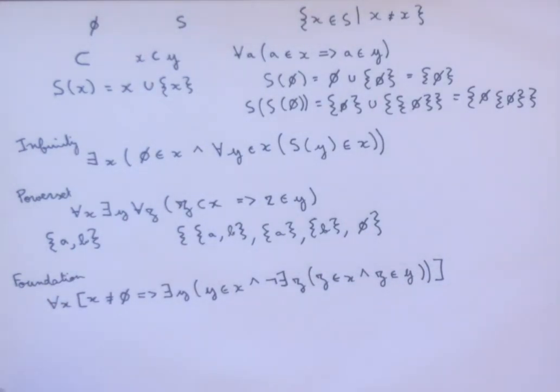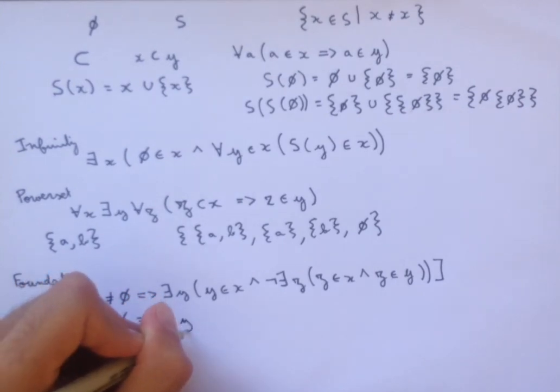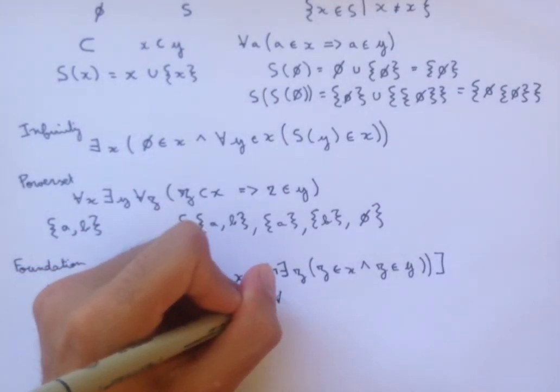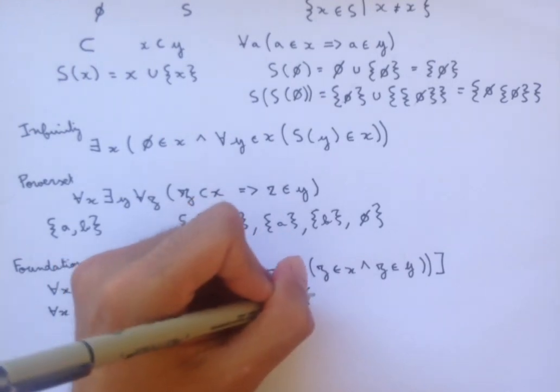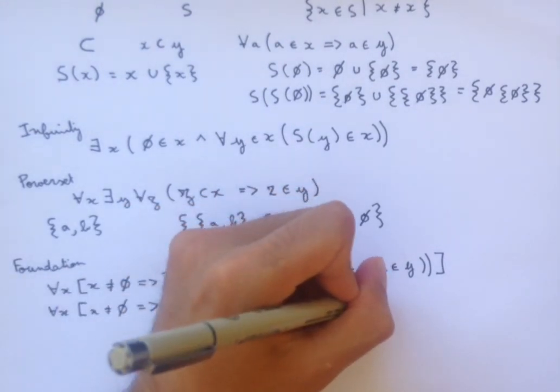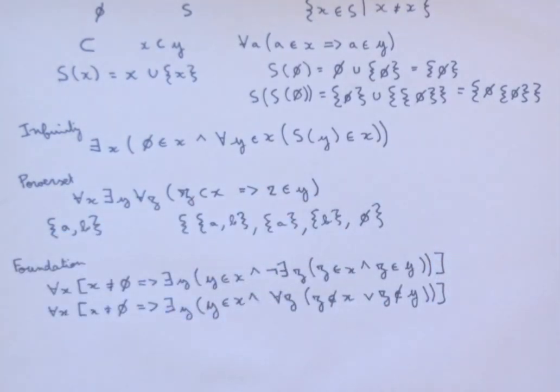And so this one's pretty complicated. I'm going to write it in a different way as well, just to help us get a better understanding of it. So, for all X, X not equal to the empty set, implies there exists Y such that Y is an element of X, and for all Z, either Z is not an element of X, or Z is not an element of Y. And so if you think about the meanings of for all and not, the equivalence of these two axioms should become apparent.